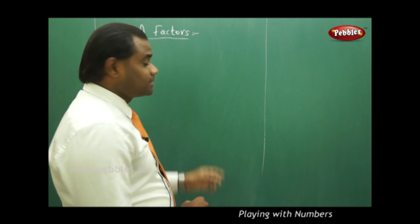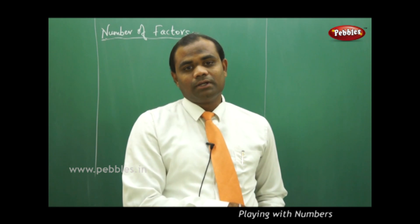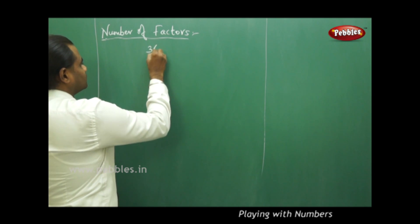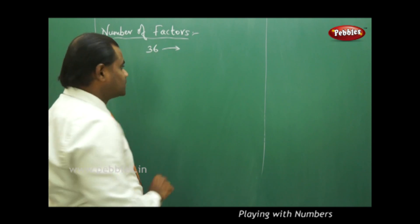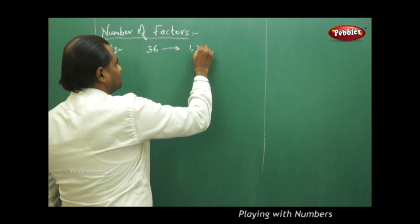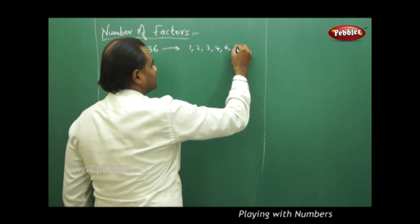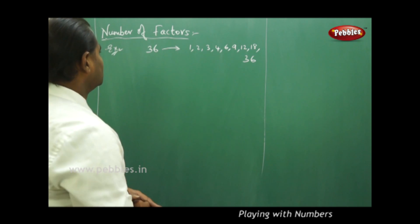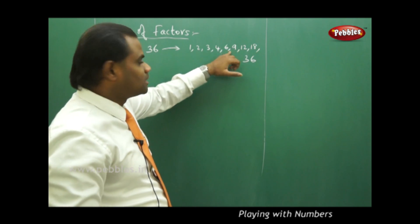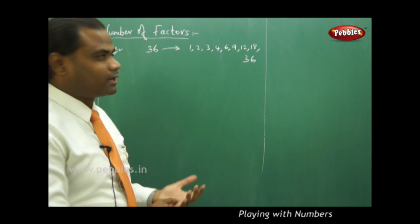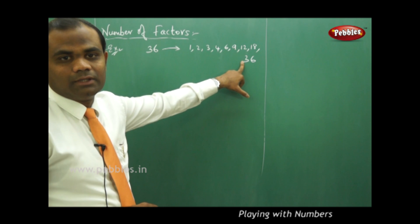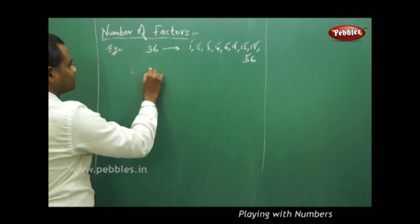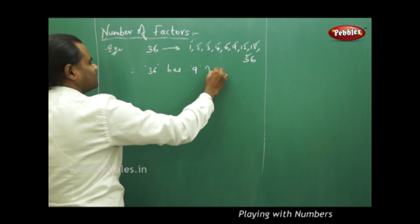The next concept is about finding the number of factors. Revisiting the previous example of finding the factors of 36: the factors of 36 are 1, 2, 3, 4, 6, 9, 12, 18, and 36. These are numbers divisible into 36 according to the definition. Counting these factors, we find that 36 has 9 factors in total.